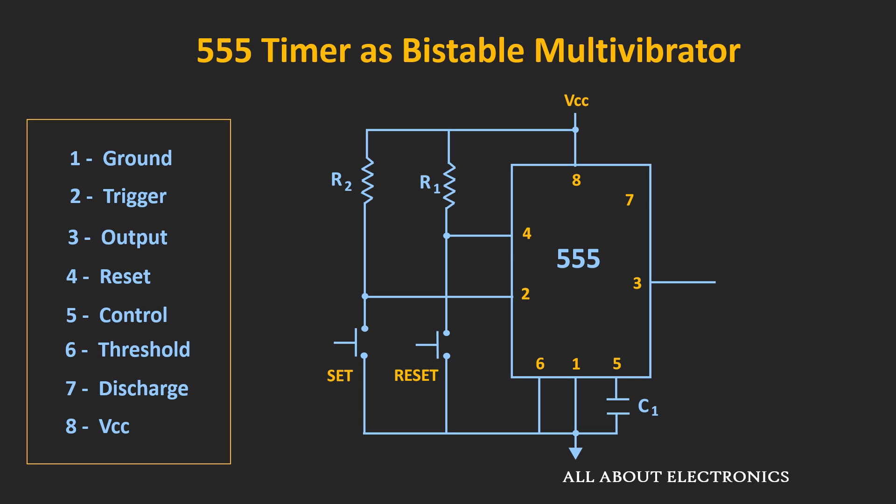So just by controlling the voltage at the trigger and reset pin, we can control the output of this 555 timer. In this circuit, the threshold pin is connected to the ground terminal, while via resistor R1 and R2, the trigger and the reset pin are connected to the supply voltage. Whenever the set and reset pin is pressed, then momentarily this trigger and the threshold pin will get connected to the ground terminal. So by controlling the inputs at the trigger and the reset pin, we can control the output of this 555 timer IC.